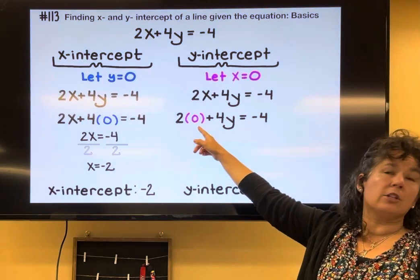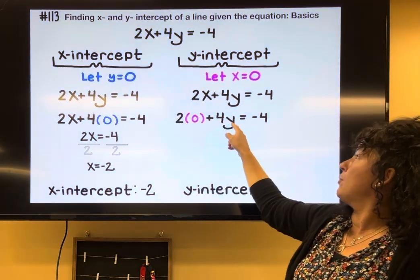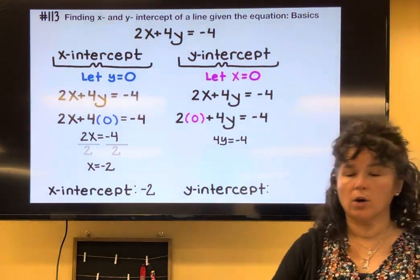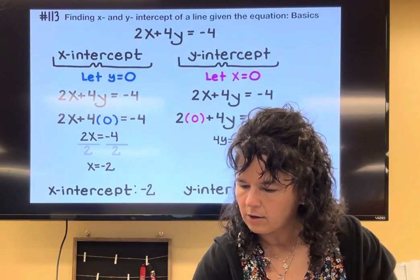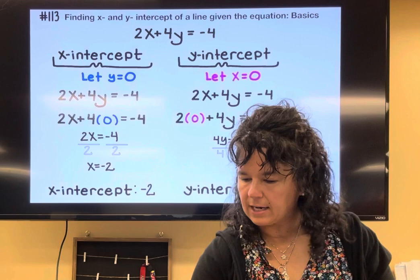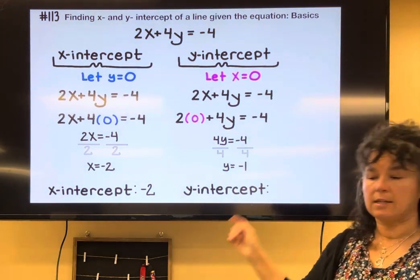2 multiplied by 0 is 0, so that's gone. And so I'm left with 4y equals negative 4. To get rid of multiply by 4, I'm going to divide by 4. And negative 4 divided by positive 4 is negative 1. So my y-intercept is negative 1.